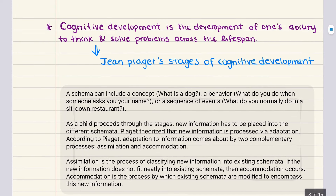Now we turn our attention to cognitive development — the development of one's ability to think and solve problems across their lifespan. Here we'll focus on Piaget's stages of cognitive development. Piaget was one of the most influential figures in developmental psychology. He insisted that there are qualitative differences between the way children and adults think, dividing the lifespan into four stages: sensory motor, pre-operational, concrete operational, and formal operational. He believed passage through each stage was continuous and sequential, with each stage preparing the individual for the next.